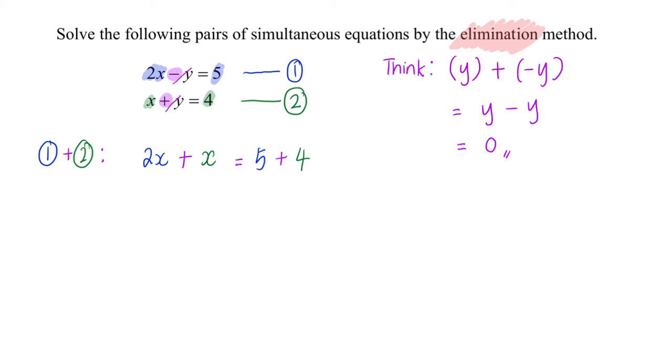So from here we can continue to simplify already. 2x plus x will be equals to 3x, 5 plus 4 will be equals to 9, and eventually x will be equals to 9 divided by 3. x equals to 3.